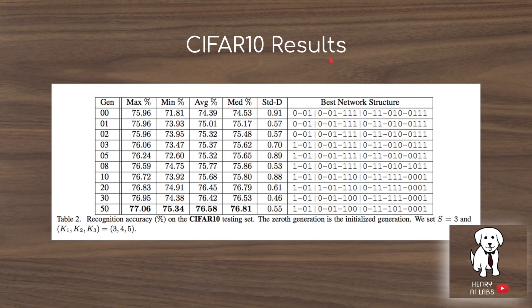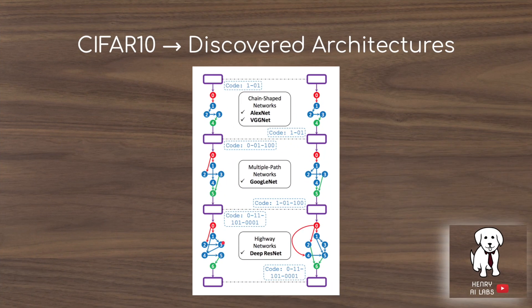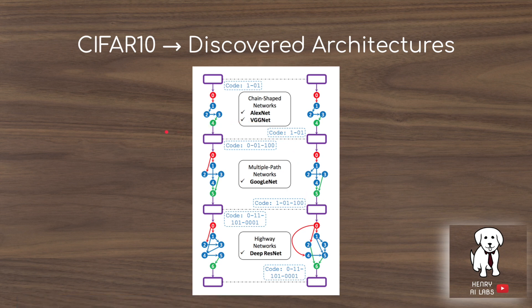On CIFAR-10 with a more complex network structure, the maximum result improves from 75.96% to 77.06%, and the average also rises by about 2%. The discovered architectures show similar connectivity patterns to popular CNNs: one resembles the sequential chain of VGGNet or AlexNet, another has multiple-path connections similar to Inception networks, and another always sends its input one layer ahead like ResNet.